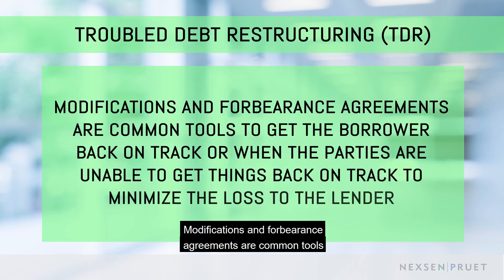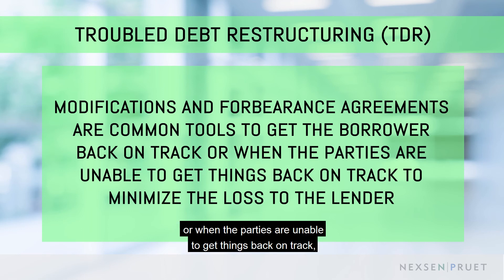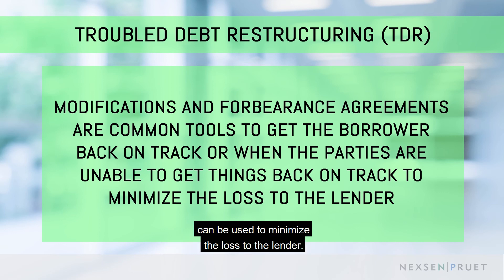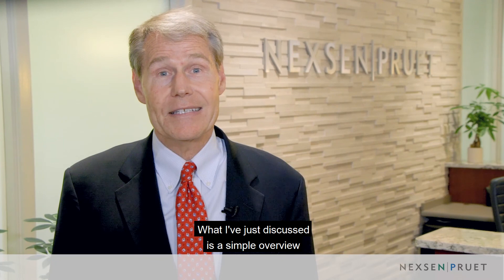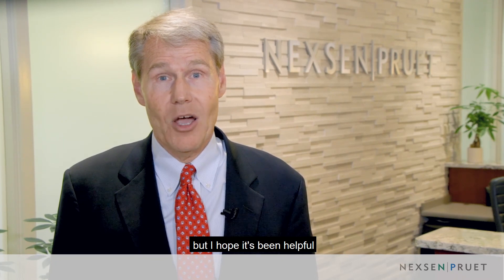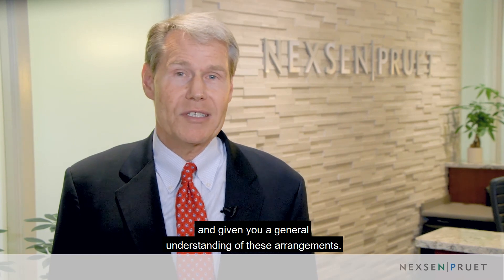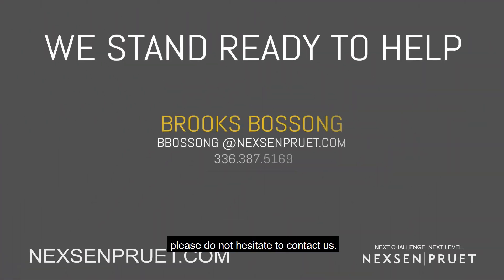Modifications and forbearance agreements are common tools to get the borrower back on track. Or when the parties are unable to get things back on track, the forbearance agreement at least can be used to minimize the loss to the lender. What I've just discussed is a simple overview of modifications and forbearances, but I hope it's been helpful in giving you a general understanding of these arrangements. If you have further questions regarding this topic, please do not hesitate to contact us.